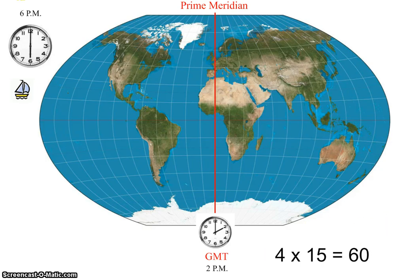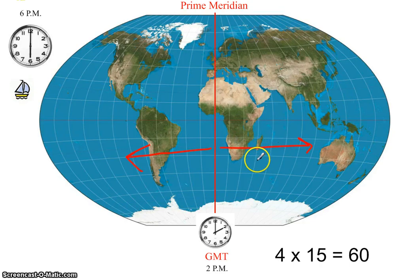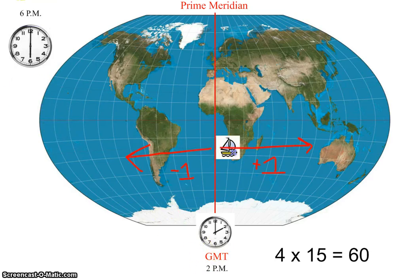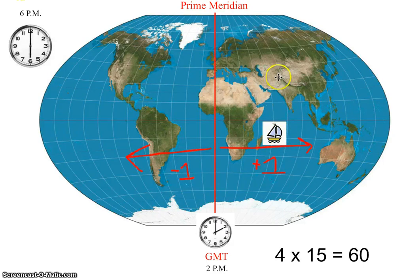Now the question is: are we 60 degrees to the east or 60 degrees to the west? Because the Earth rotates from west to east, when we travel east we add an hour for every time zone crossed, and when we travel west we subtract an hour. The ship's time is 6pm, which is later than Greenwich, so the ship has to be to the east. Therefore, the longitude is 60 degrees east.